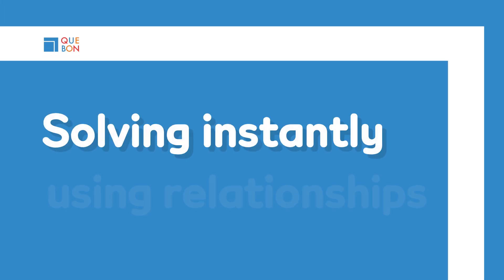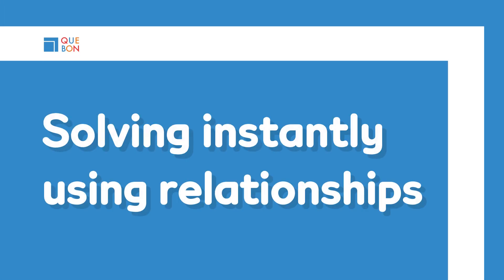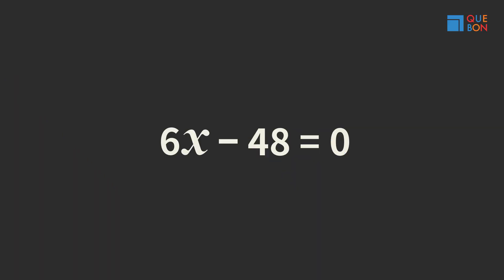Solving instantly using relationships. We'll start with a problem: 6x - 48 = 0. How are you going to approach this problem?